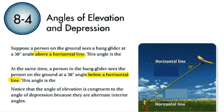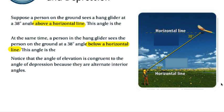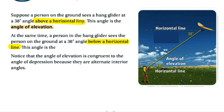Let's start with an example. Suppose there's a person on the ground looking up and seeing a hang glider. The angle formed by the horizontal line from the ground up to the hang glider is called an angle of elevation. Angles of elevation are always measured above a horizontal line.